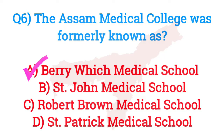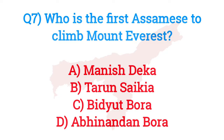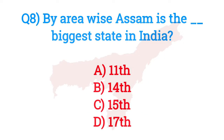Question number seven: Who is the first Assamese to climb Mount Everest? The answer is option B — Tarun Saikia. Question number eight: Area-wise, Assam is the how-many-th biggest state in India? The answer is option D — 17th.